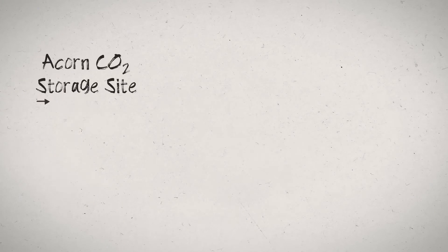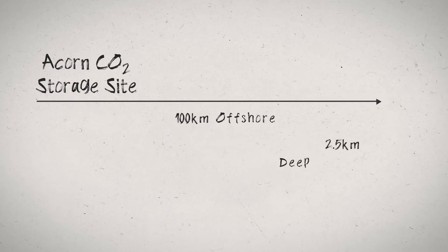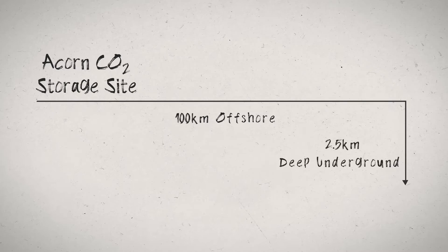The cool thing is that these pipelines were once used to transport natural gas from deep underground in the North Sea to the St Fergus gas terminal. And now we're going to be converting these pipelines so that we can transport CO2 from the gas terminal deep underground within the North Sea. The ACORN CO2 storage site is located about 100 kilometres offshore and two and a half kilometres deep underground. When we inject the CO2, it will be under a lot of pressure so it becomes a kind of liquid, which we'll pump from onshore along the pipeline and inject it deep into the underground rock.